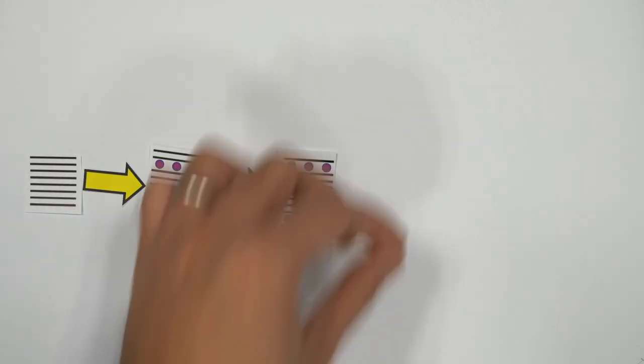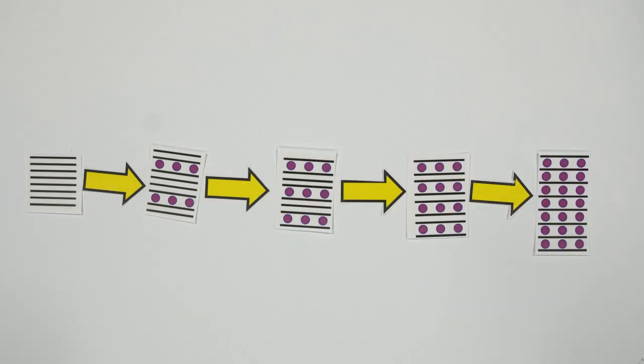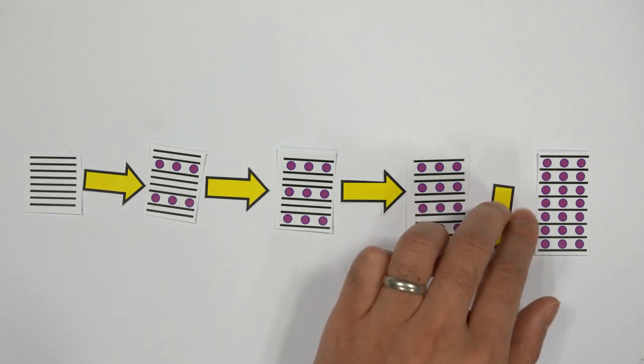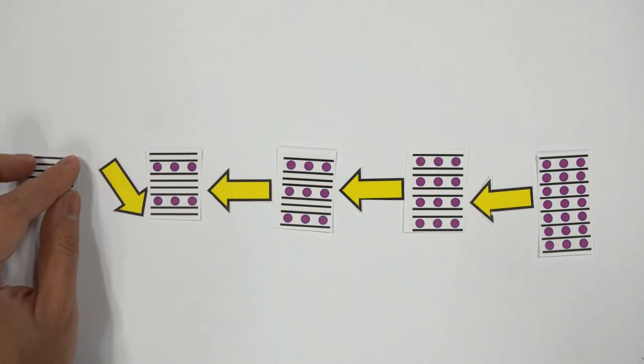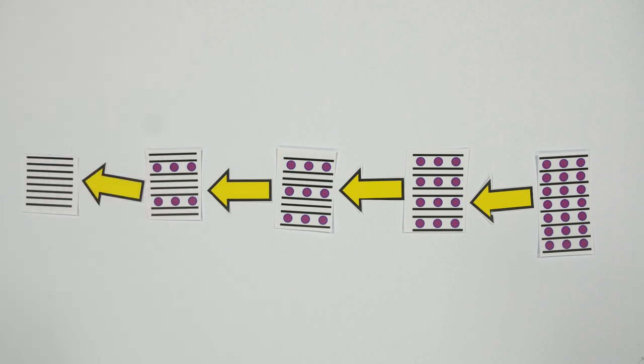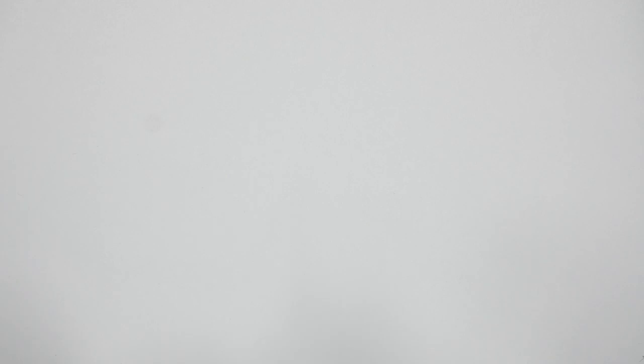During insertion, the lithium ions distort the sheets and deform the structure. Then, when the lithium is released, this process is reversed and the graphite returns to its sheet-like state. This structural change can be monitored by Raman spectroscopy. Let's take a closer look at how this works.